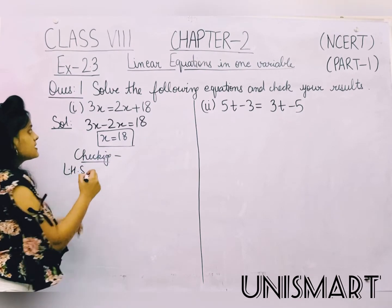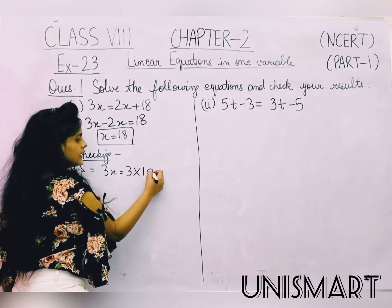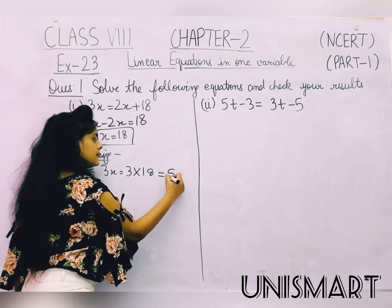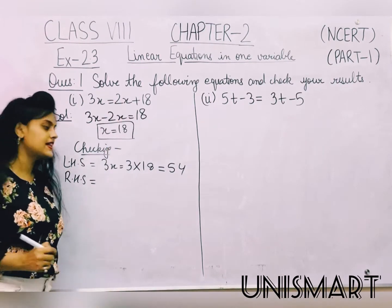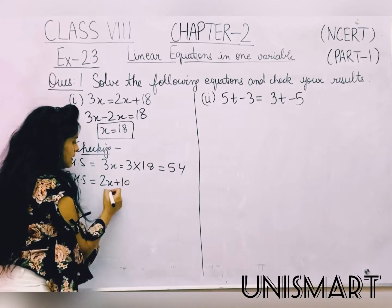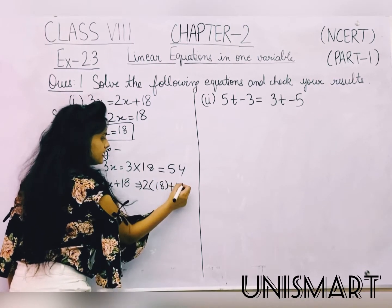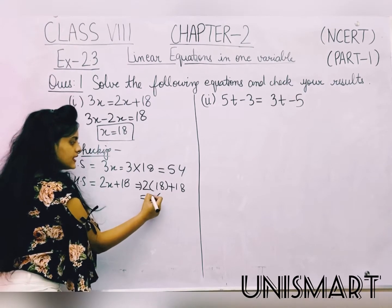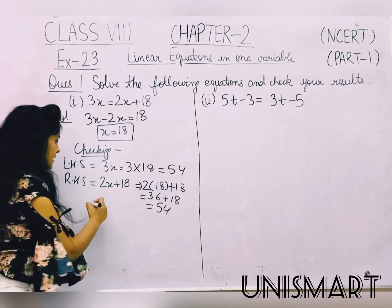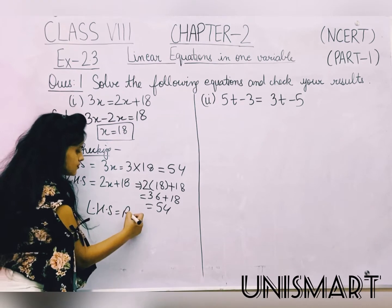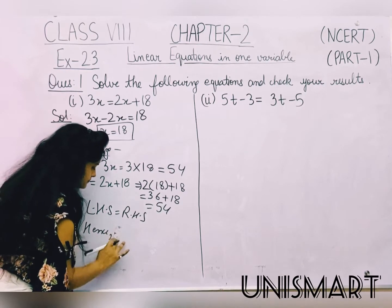Now we do checking to verify our answer. LHS is 3x, so 3 multiplied by 18 is 54. RHS is 2x plus 18, so 2 multiplied by 18 is 36, and 36 plus 18 is 54. LHS is equal to RHS. Hence verified.